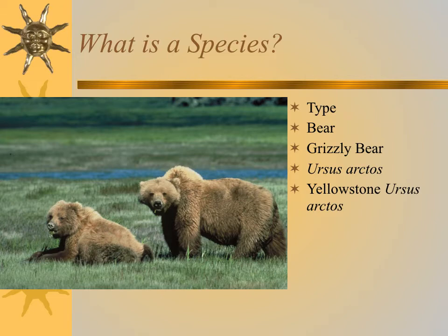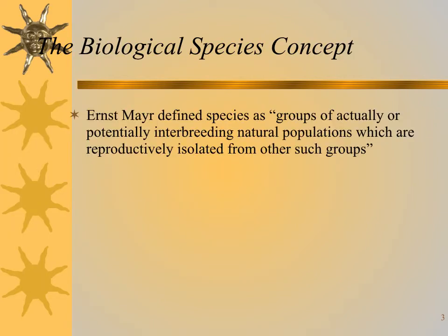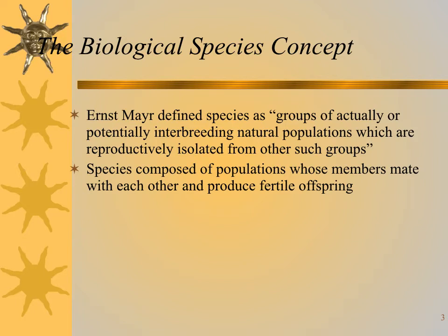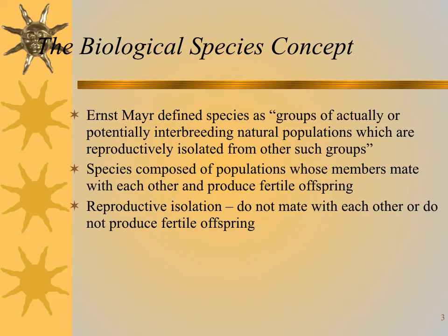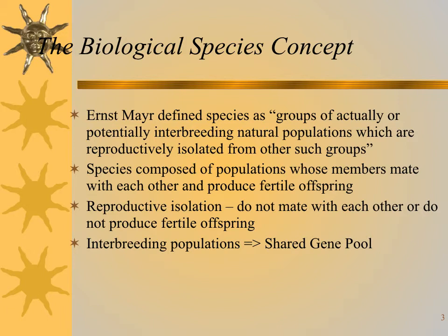When it gets to evolution, it gets a little more complicated, because it's not always so neat — sometimes it gets fuzzy. A species is defined as groups of actually or potentially interbreeding natural populations which are reproductively isolated from other such groups. Species are composed of populations whose members can mate with each other and produce fully fertile offspring. These groups do not mate with other groups or do not produce fertile offspring. Interbreeding and sharing genes are key parts of this definition.